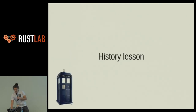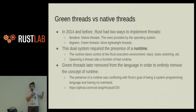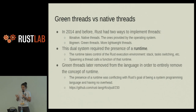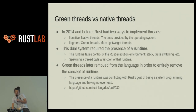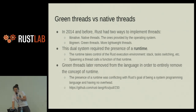First of all, a history lesson. Back in 2014, Rust actually had a runtime. You had two kinds of threads: green threads and system threads. You had lib-green if you wanted green threads, and lib-native if you wanted native threads, and you had to choose between them. This was later removed because Rust was oriented to be a very low-level language that should not have a runtime, and therefore green threads were removed.